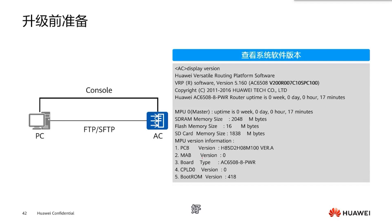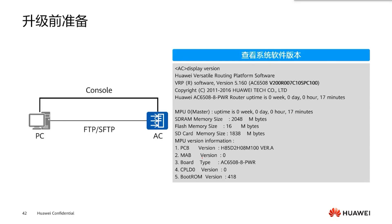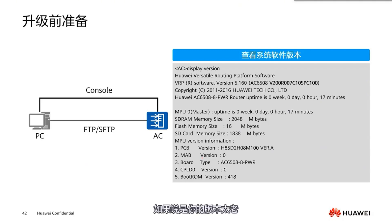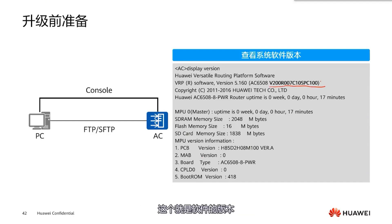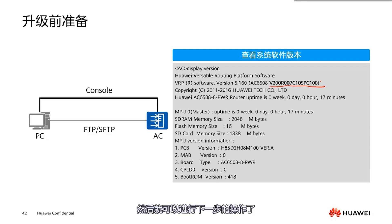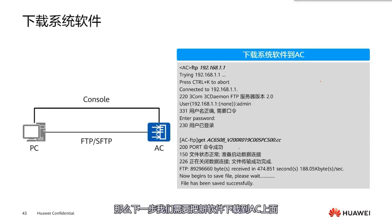In practical terms, the first step is to check and confirm the version of the system software. Some upgrades have specific version requirements — if your version is too old, it may not be possible to upgrade directly to the latest version, and some intermediate versions might be required. We must first determine the new software version, and after confirming the upgrade package is compatible, we can proceed to the next steps.